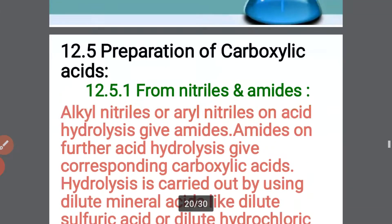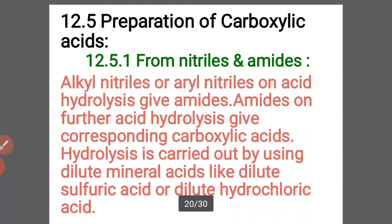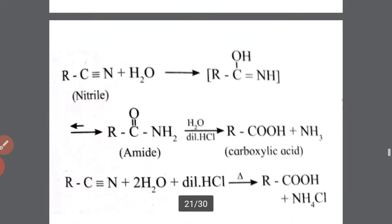The first preparation method of carboxylic acid is from nitriles and amides. Alkyl nitriles or aryl nitriles on acid hydrolysis give amides. Amides on further acid hydrolysis give corresponding carboxylic acids. Hydrolysis is carried out using dilute mineral acids like dilute sulfuric acid or dilute hydrochloric acid. See the reaction.